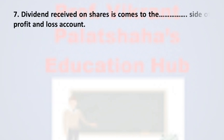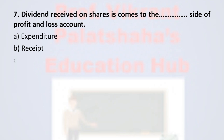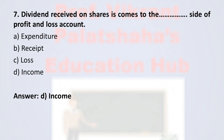Question number 7: Dividend received on shares comes to the ___ side of the profit and loss account. Option A: expenditure. Option B: receipt. Option C: loss. Option D: income. The correct option is option D, income. Dividend received on shares is recorded under the income or credit side of the profit and loss account. Therefore, the correct option is option D.